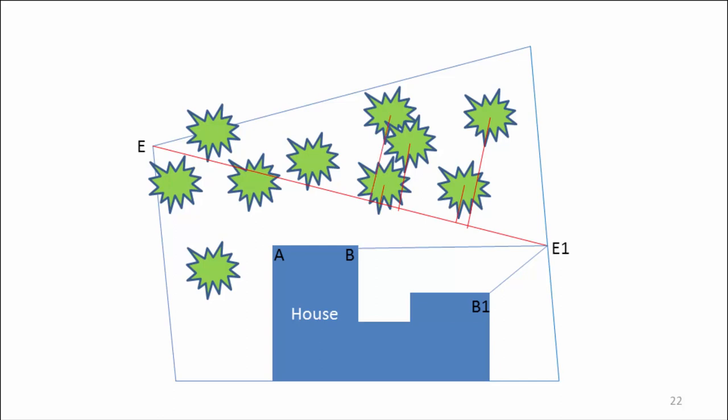Then record the measurement from the tree as well as the point at which the two tapes meet. In this way, you can quickly measure many trees using a range of offsets.